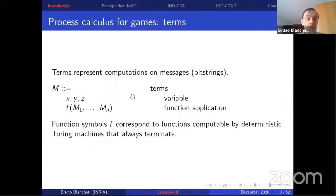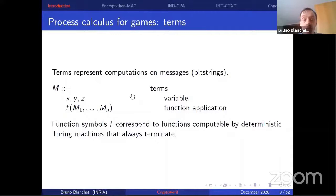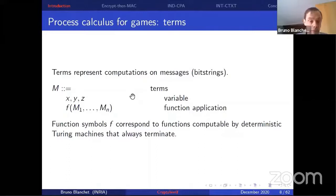Let me give a quick summary of the main syntax constructs of the CryptoVerif language. Terms represent computations and messages — messages are bitstrings. Terms can be variables containing bitstrings, or function applications such as encryption applied to some arguments. These function symbols correspond to deterministic Turing-computable functions from bitstrings to bitstrings. We don't allow probabilistic function symbols, but we can represent probabilistic functions by choosing random coins a priori and passing them as arguments.